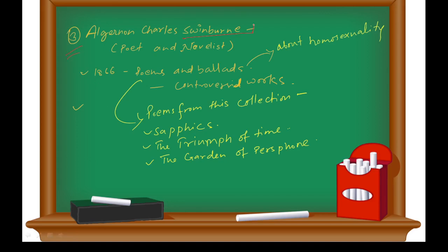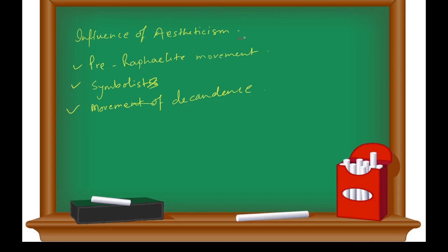Algernon Charles Swinburne was a poet and novelist. In 1866 his Poems and Ballads got published. These works were controversial - he talked about taboo things in the Victorian era like homosexuality. His works were full of sexuality, so it was controversial at that point in time. Some important poems from this collection are: Dolores, The Triumph of Time, and The Garden of Proserpine.